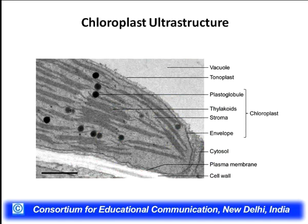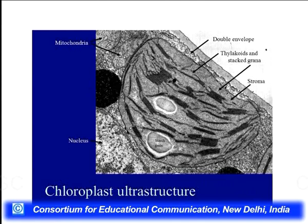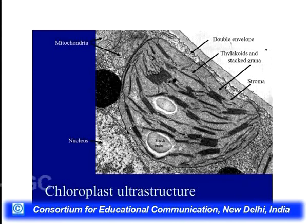Looking at the chloroplast ultrastructure through a transmission electron microscope, we see a very organized array of thylakoids arranged as grana within the double-membrane-bounded organelle. Starch grains are also present, because the sugars formed through photosynthesis polymerize into starch when there is no need for immediate translocation. When translocation is needed, the products move as sugars.